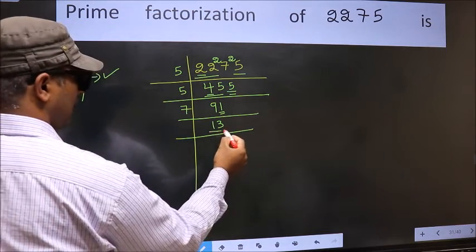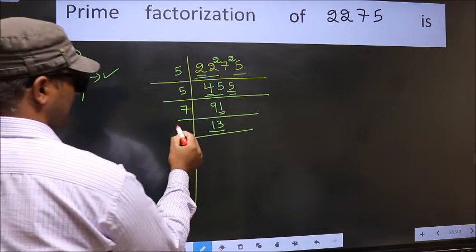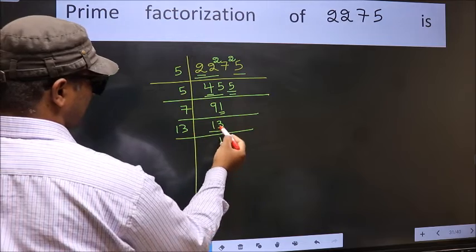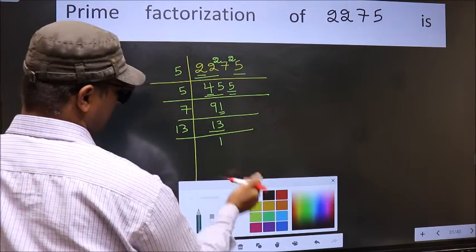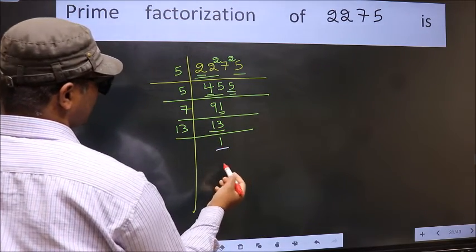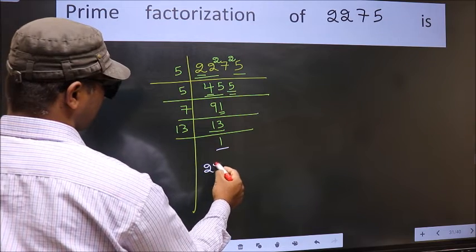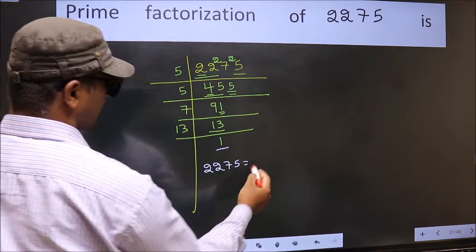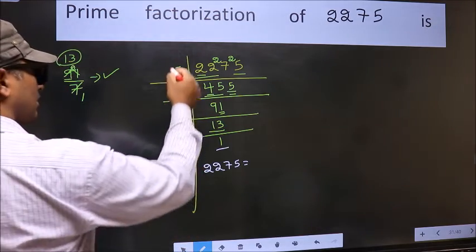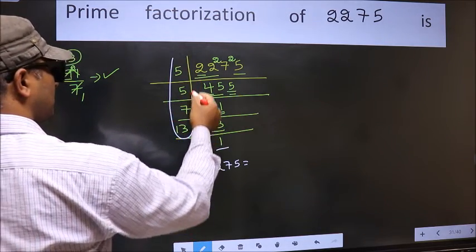Now we have 13. 13 is a prime number, so 13 once, 13. So we got 1 here. So the prime factorization of 2275 is the product of these numbers.